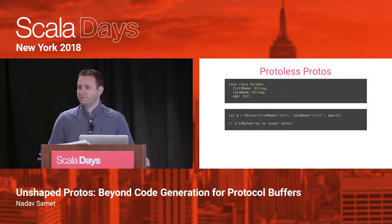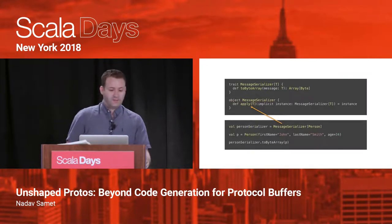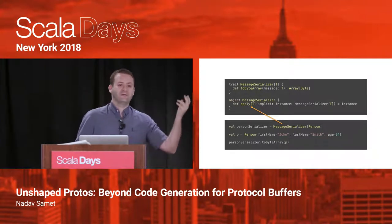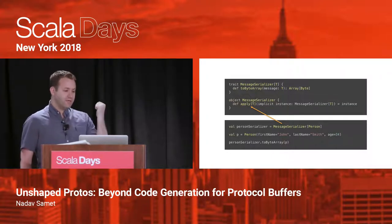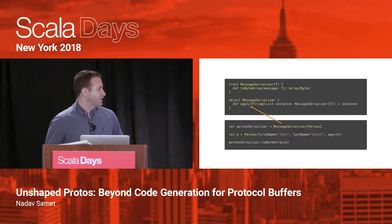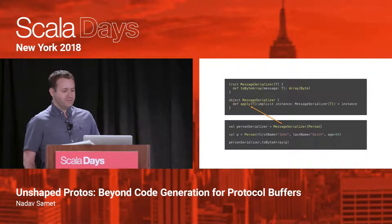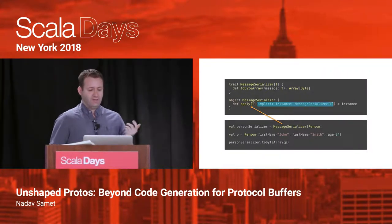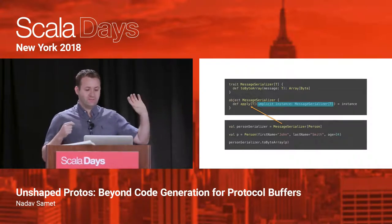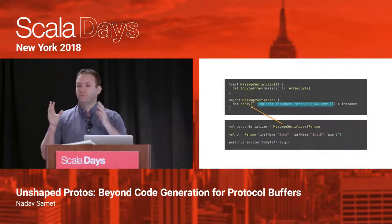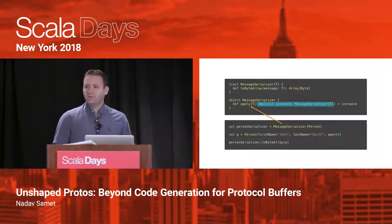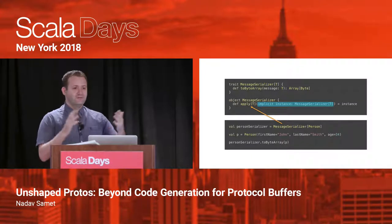A common idiom in Scala in situations like this is to introduce the type class pattern. The idea is to define a trait called MessageSerializer that takes a type parameter T — where T is the thing we want to serialize, like Person. It will have a toByteArray method that takes an instance and returns an array of bytes. Another idiom with type classes is the apply method inside the companion object that acts as a constructor — it runs an implicit search and returns back the instance it finds. Assuming we have a MessageSerializer for any type T, we can use it to serialize to an array of bytes.